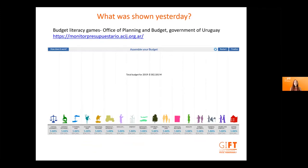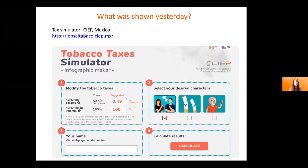First, we had presentations on simulations and budget games. The Office of Planning and Budget of Uruguay presented their budget literacy games. They have had this one on screen for a while now, and they have a very important strategy for budget literacy, mainly in elementary and middle schools. With the pandemic, they've had to change their approach. They're now working on different activities — subtleties, crosswords, et cetera — that will be soon launched, but they are still in testing.